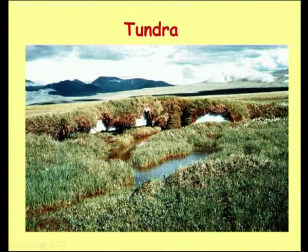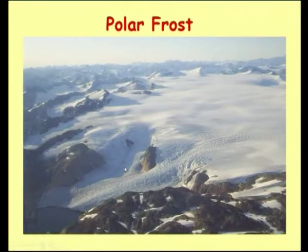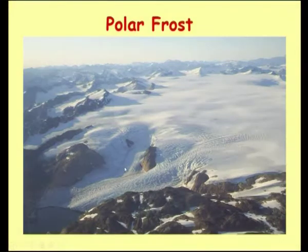The Tundra means some small amount of vegetation, and small animals are also seen there. The polar frost, EF, has all 12 months with average temperature below 0 degree centigrade. This climate is dominant in Antarctica, at the Scott Base, and in inner Greenland, including the Ice-Smith and the Northern Ice, and interior Greenland glaciers. The temperature is sub-zero and the climate is uniform throughout the year. There is only ice and glacier with very little vegetation, and therefore no possibility of human beings dwelling there. All the Antarctic region comes under this category.